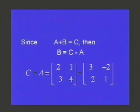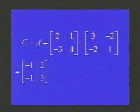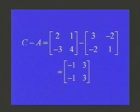2 minus 3, 1 minus negative 2, negative 3 minus negative 2, and 4 minus 1. So I got that B is equal to negative 1, 3, negative 1, 3.